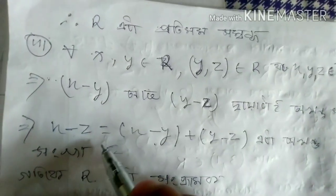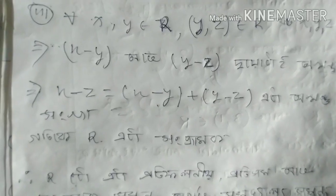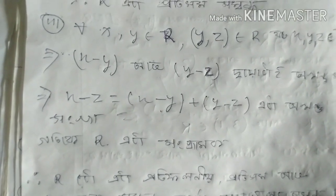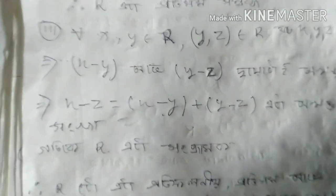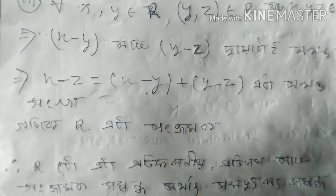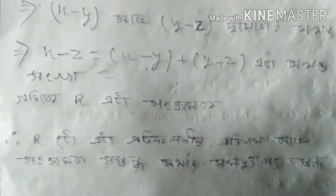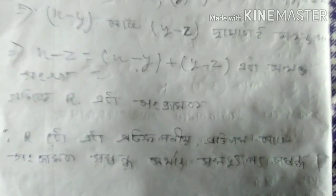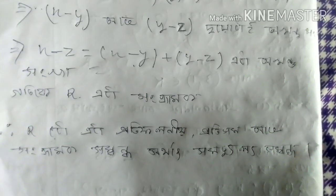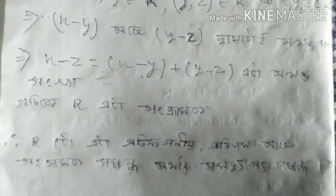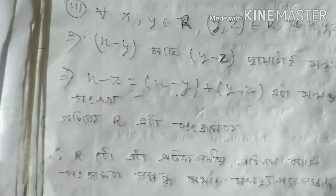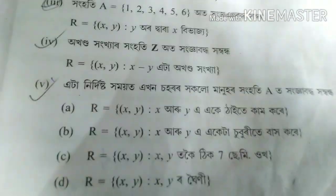So we are equal to y minus z. Therefore x minus z equals x minus z. So we will be able to do the same thing. We will do the same question for the exercise and solve the question.